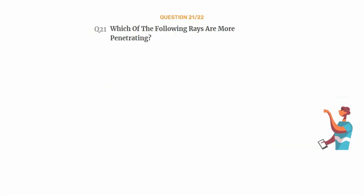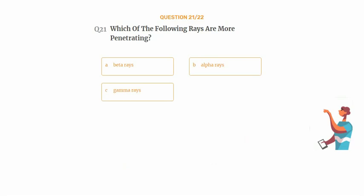Question number 21. Which of the following rays are more penetrating? Option A: Beta rays. Option B: Alpha rays. Option C: Gamma rays. Option D: X-rays.